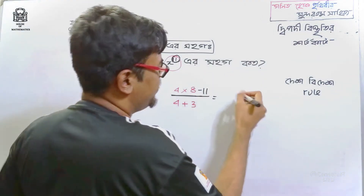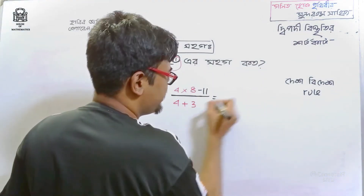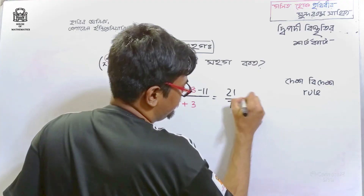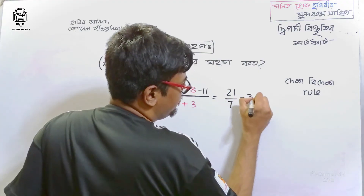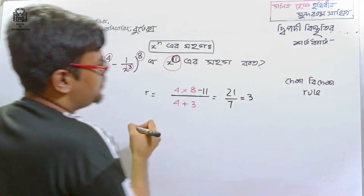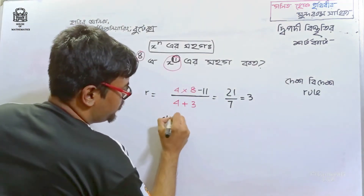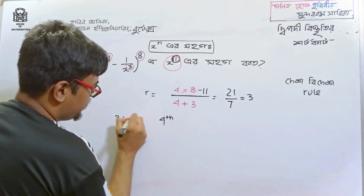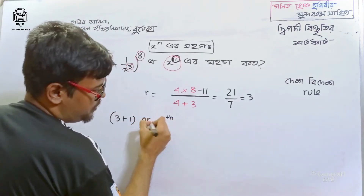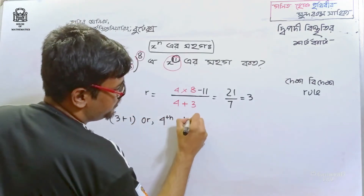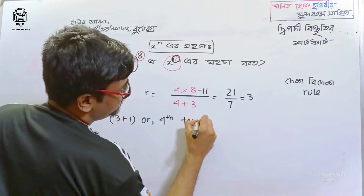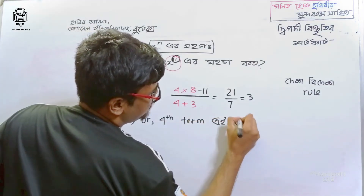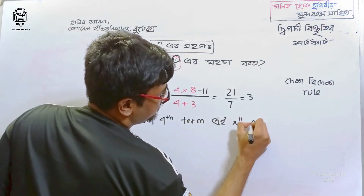It is minus 3. It is minus 3, you will get minus 1. We will get minus 4 times — meaning 3 plus 1. We will get minus 4 times, and we will get minus x to the power 11.